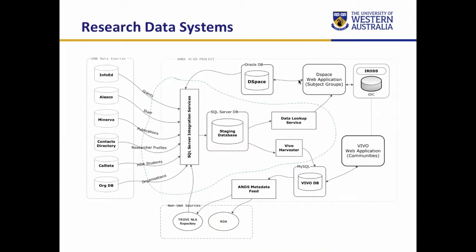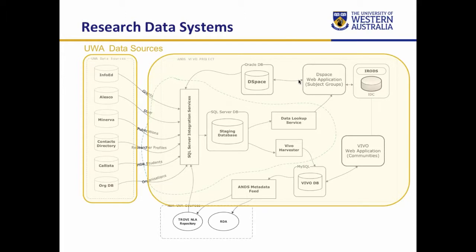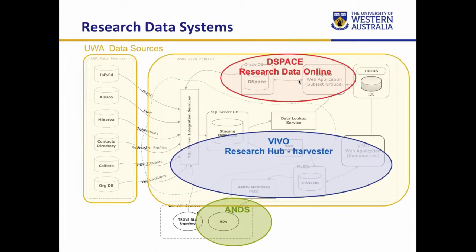That schematic diagram shows all of our UWA sources and how the systems interact with each other, particularly for our research datasets. The web applications were highly customised in DSpace to meet initial requirements from the ANS projects. DSpace was used to upload datasets and input descriptive metadata, and Vivo was used to link grants, researchers, and publications to feed through to Research Data Australia. Our intention was to eventually use Vivo as a researcher profiling system, but that never eventuated.